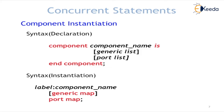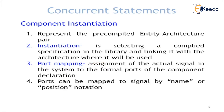When doing a component instantiation there are two clauses: the component declaration and the component instantiation. We need to declare the component using the keyword component. The component name should be exactly the same as the entity name of the component we want to use in our architecture, with the same generic list and port list, ending with the component keyword. Then for the instantiation we give a label, the component name, and its port map or generic map. Let us now see a component instantiation example.